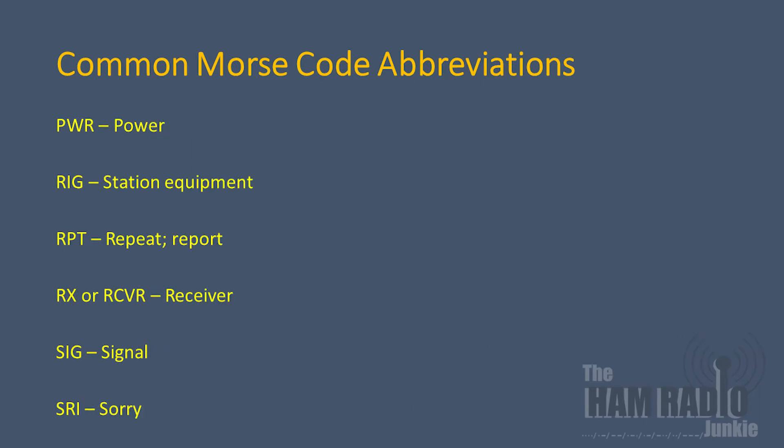Most of these abbreviations are fairly straightforward, such as 'power', 'rig', R-X or R-C-V-R for 'receiver', and SIG for 'signal'. Note S-R-I means 'sorry'. You may see S-R-I, N-I-L, C-P-Y — meaning 'sorry, nil copy' — as in, I'm sorry I'm not able to hear you.